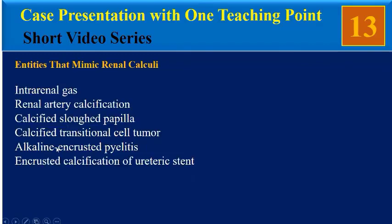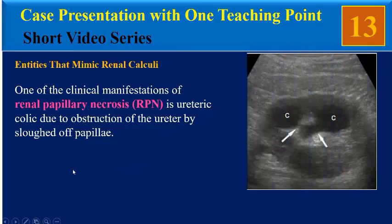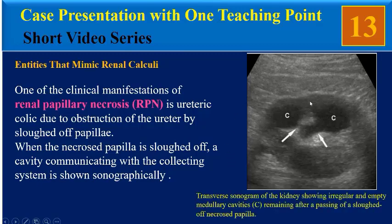Another differential diagnosis is calcified sloughed papilla. One of the clinical manifestations of renal papillary necrosis is ureteric calcification due to obstruction of the ureter by a sloughed papilla. When the necrosed papilla is sloughed off, a cavity communicating with the collecting system is shown sonographically, as seen in this transverse sonogram of the kidney showing irregular and empty medullary cavities remaining after passing of a sloughed necrosed papilla.